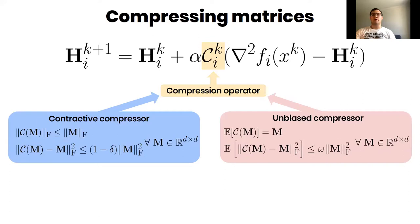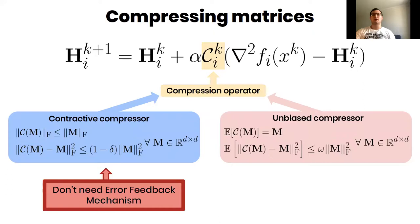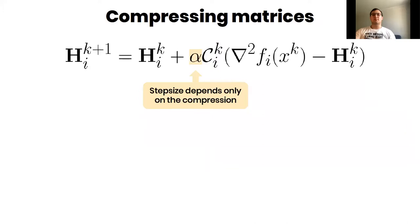I would like to note that our theory doesn't rely on error feedback mechanisms in order to work with contracted compressors. And the step size alpha doesn't depend on the condition number. It only depends on the compression.